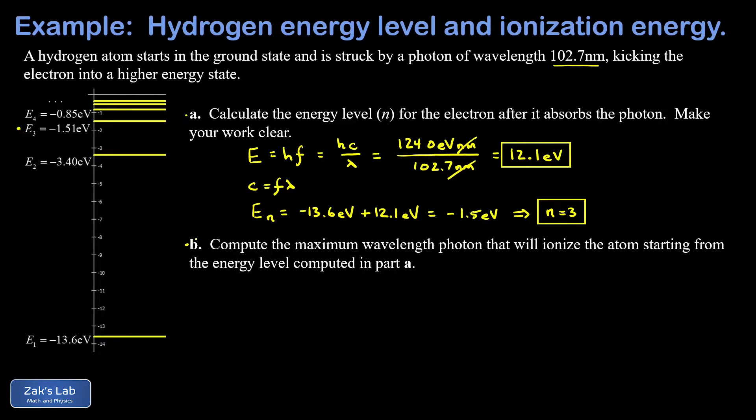Now in part b, we're asked to compute the maximum wavelength photon that will ionize the atom starting from the n = 3 state that we computed in part a. What it takes to ionize the atom is to get the energy all the way to zero—so we're getting out of this potential energy well—and when we get to zero, the electron is no longer bound to the atom.